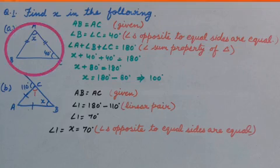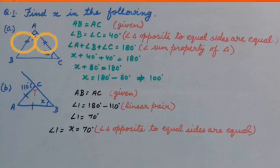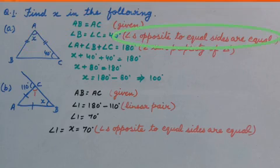One triangle is given. In the triangle, two sides are equal: AB equals AC. Therefore, angle B equals angle C equals 40 degrees, because angles opposite to equal sides are equal in an isosceles triangle.